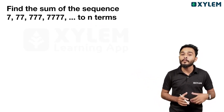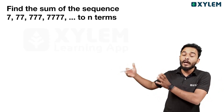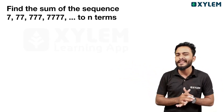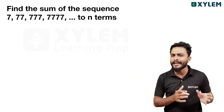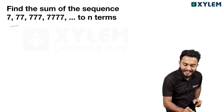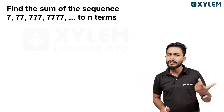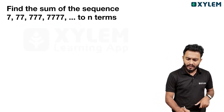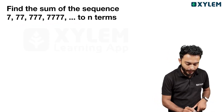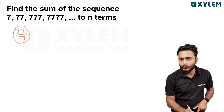This question is about the sum of some special sequences in the chapter of series. The question involves finding the sum, and it will be 77 divided by 7 — this is the common ratio.